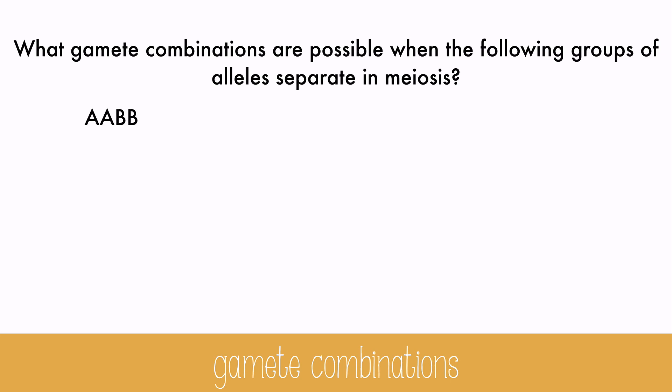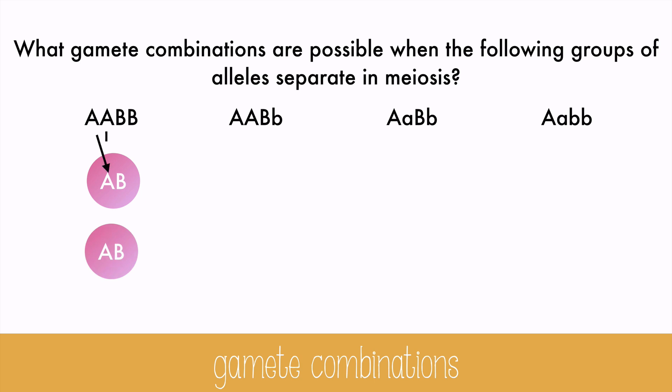With all of these different combinations, remember that only half of the genes are used to make a gamete. So we get to pull just one A and one B. For the first letters, no matter which A or B we choose, we still get the same combination: capital A, capital B. So there's only one possible combination in this case.